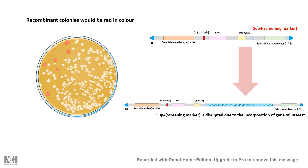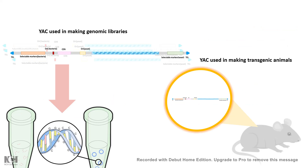Yeast Artificial Chromosomes are especially used to make genomic DNA libraries, particularly for large genomes like the human genome or mammalian genomes. They can also be used for making transgenic mouse models, especially for cloning genes that are very large.